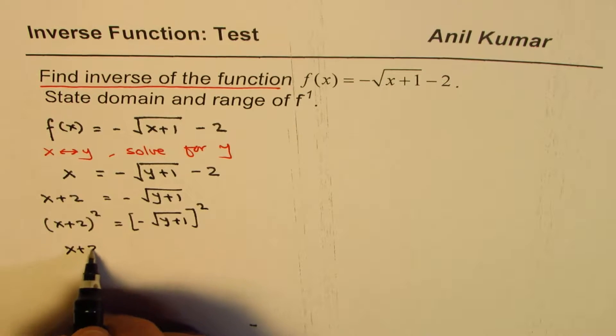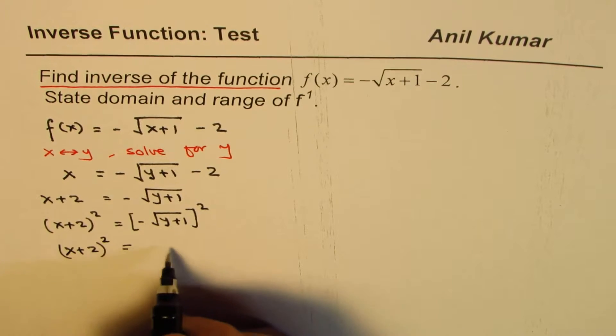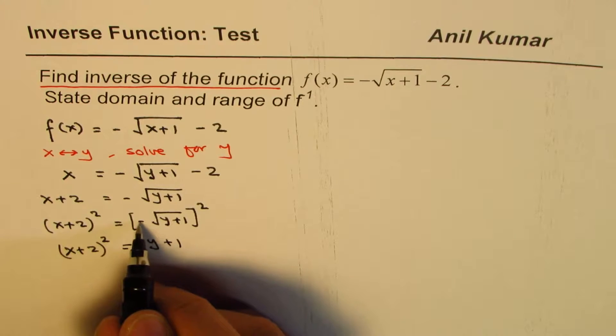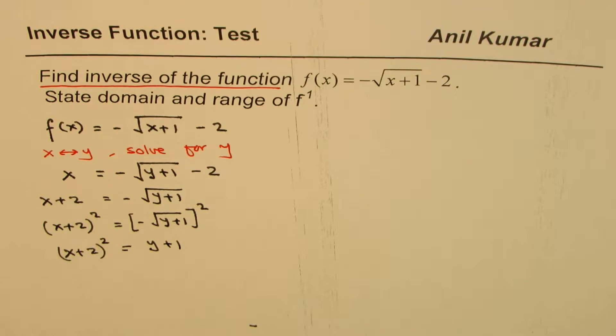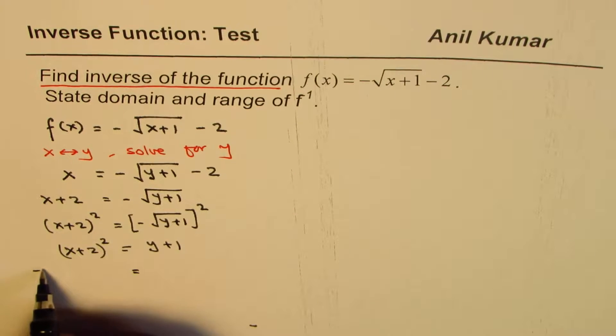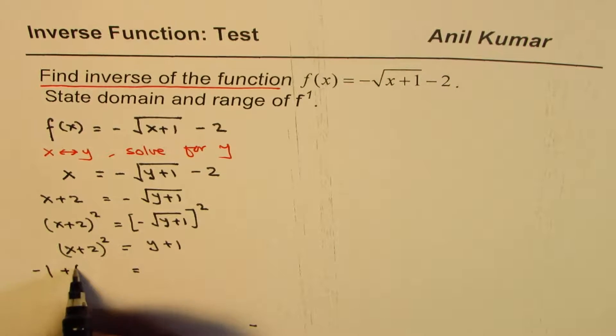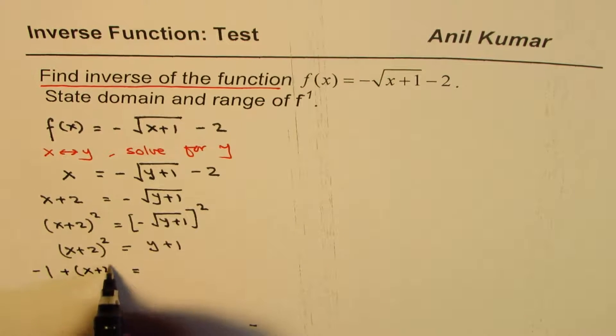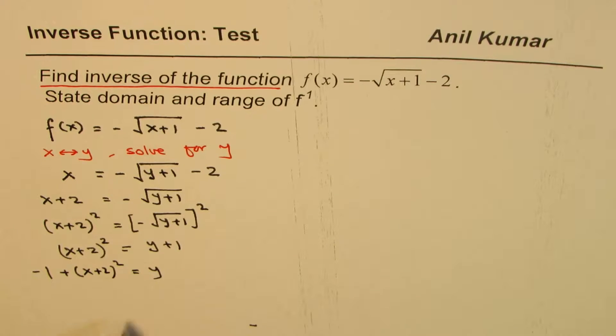So basically, what you see is x plus 2 whole square equals to y plus 1. Because this minus becomes positive and you're left with y plus 1. And that results into taking 1 this side as minus 1. And this is plus x plus 2 whole square, right? Is y.